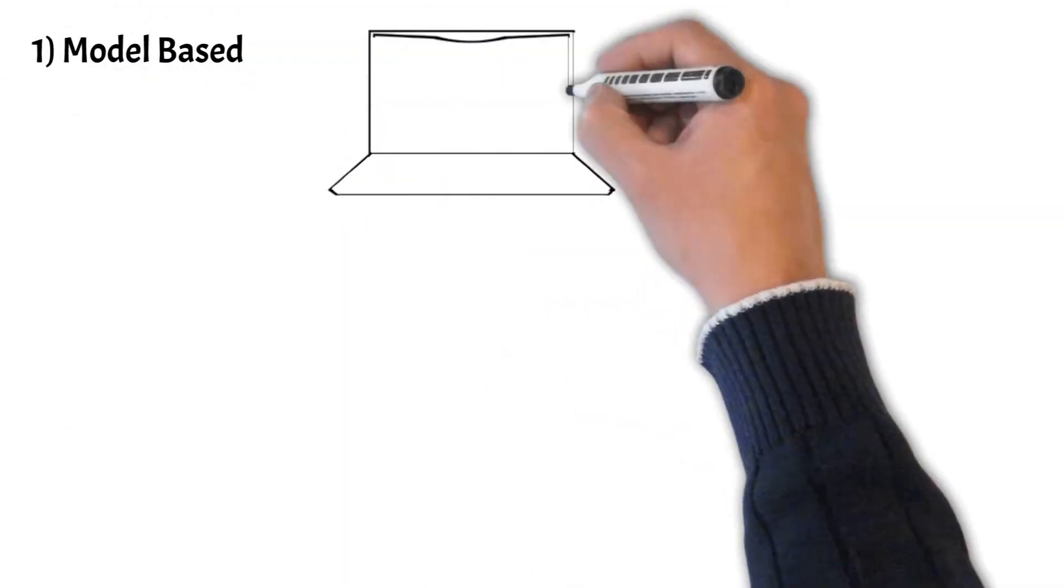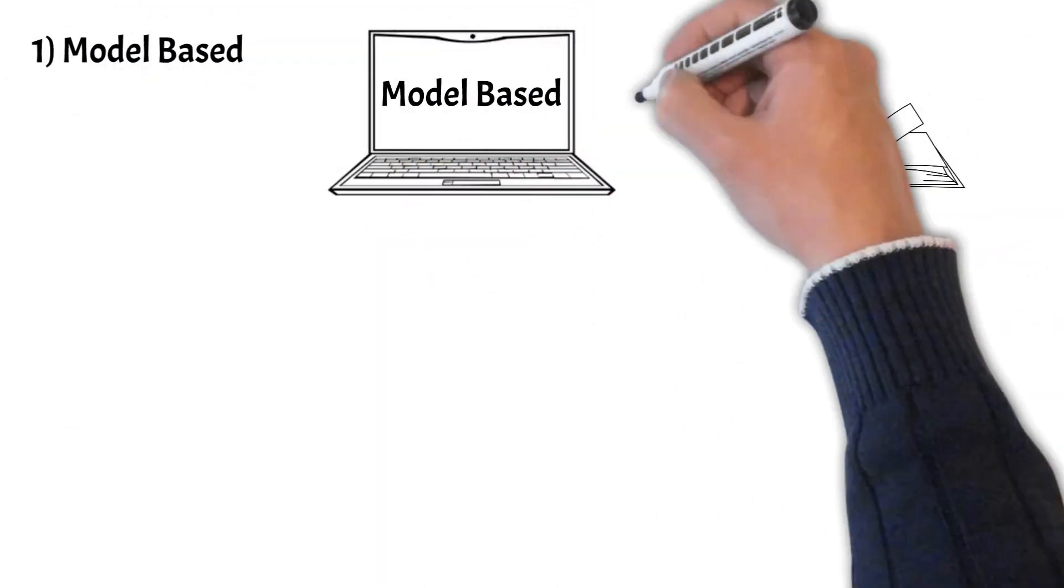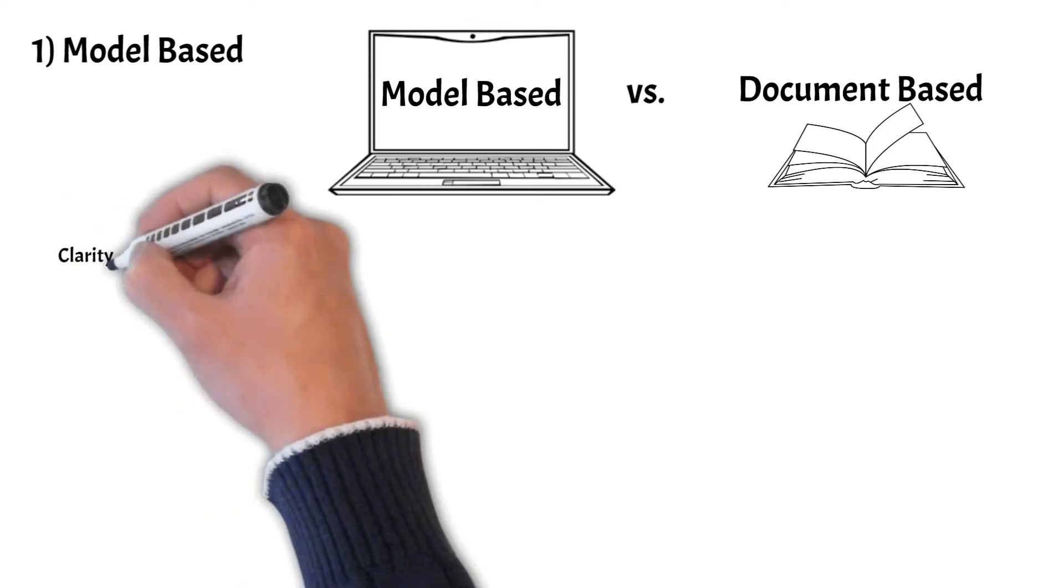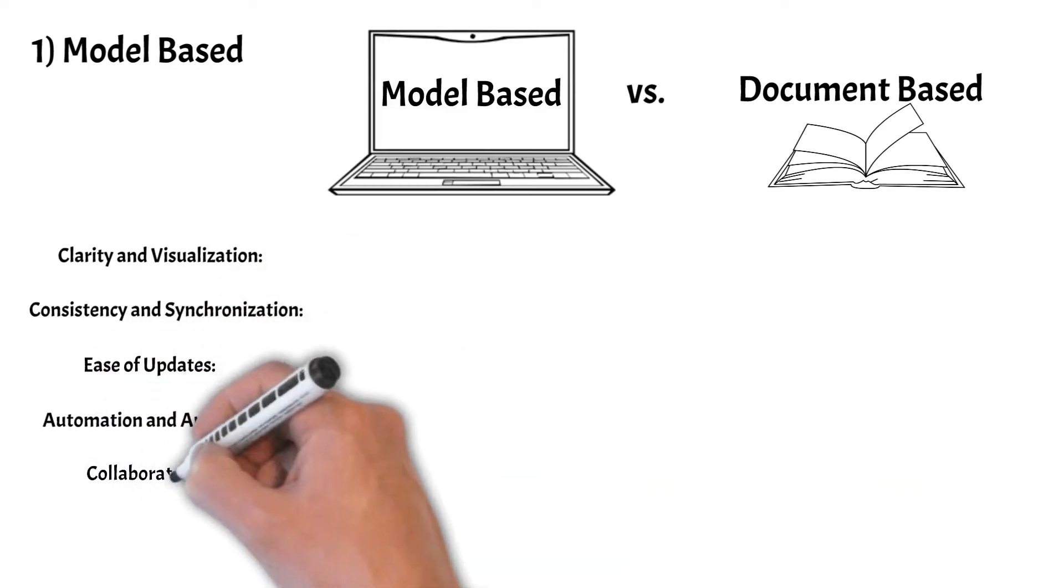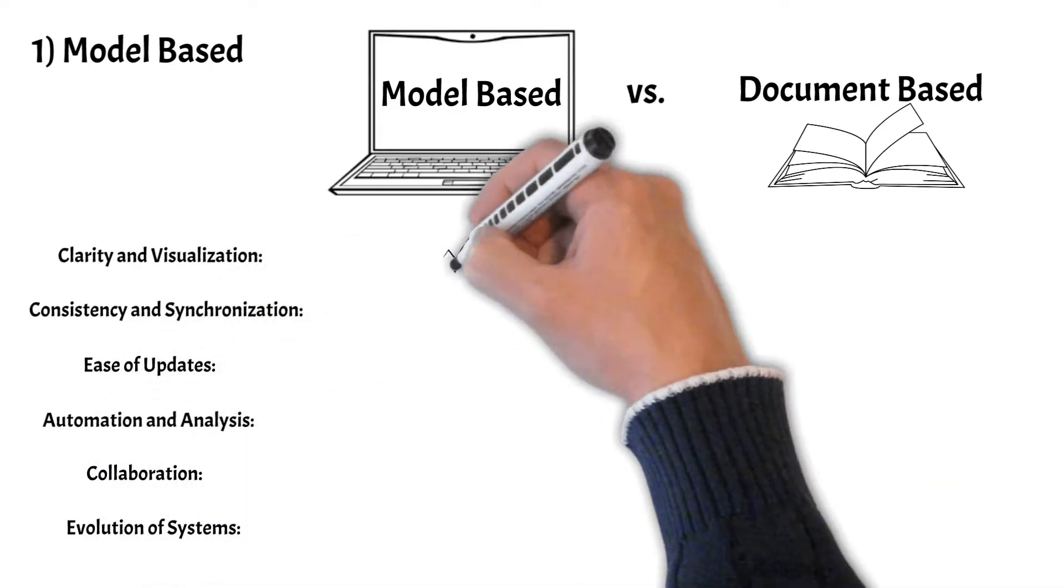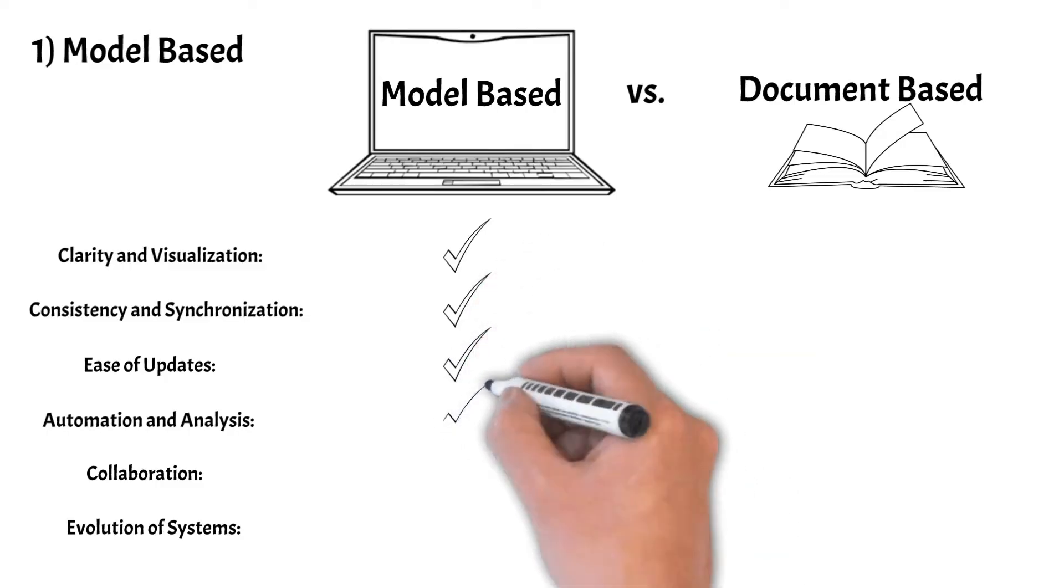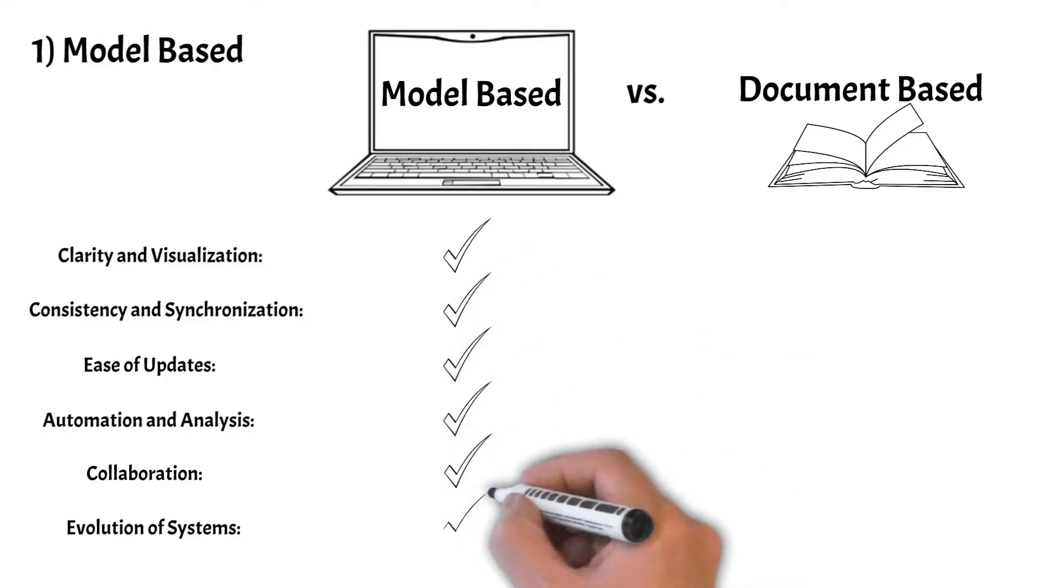The alternative to a model-based approach is a document-based approach where all of the data is written in a document rather than saved within computer models. There are several advantages to a model-based approach over a document-based approach, which include enhanced clarity and visualization, consistency and synchronization, ease of updates, automation and analysis ability, ease of collaboration, and enhanced evolution of systems.